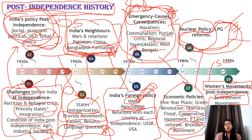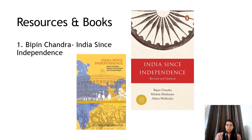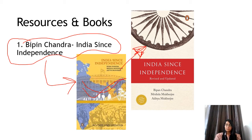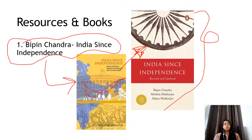So that was your post-independence history syllabus. The resource or book you can use is just one — Bipin Chandra's India Since Independence. It is a very good and detailed book; in every topic you will get information for your basic understanding. Take the latest edition available in the market and prepare it comprehensively. You can supplement it with internet resources if you don't understand any topic. I hope this discussion helps. If you have any doubts, post them in the comment section and I will respond. Thank you for watching.